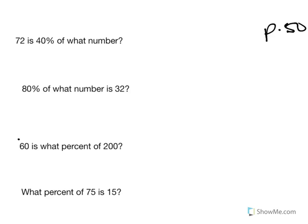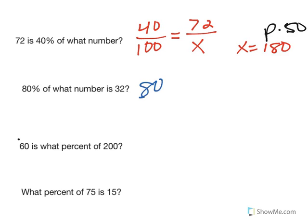So in the first one, 72 is 40% of what number? So 40 over 100 equals 72 over x. Cross multiply, x is 180. The second one, 80% over 100. Of what number is 32? So x over 100 times 32. Cross multiply, and x is 40.